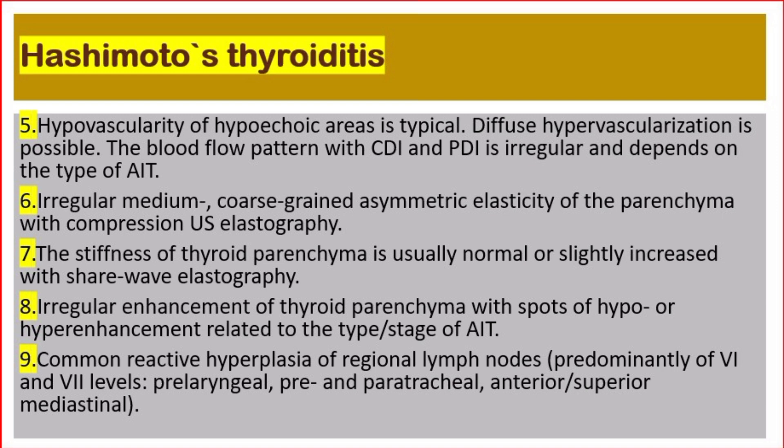Number five: hypovascularity of hypoechoic areas is typical; diffuse hypovascularization is possible. Blood flow assessed with color Doppler and power Doppler is irregular and depends on the type of autoimmune thyroiditis. Number six: irregular medium to coarse-grained asymmetric elasticity of the parenchyma with compression ultrasound elastography. Number seven: stiffness of thyroid parenchyma is usually normal or slightly increased with shear wave elastography.